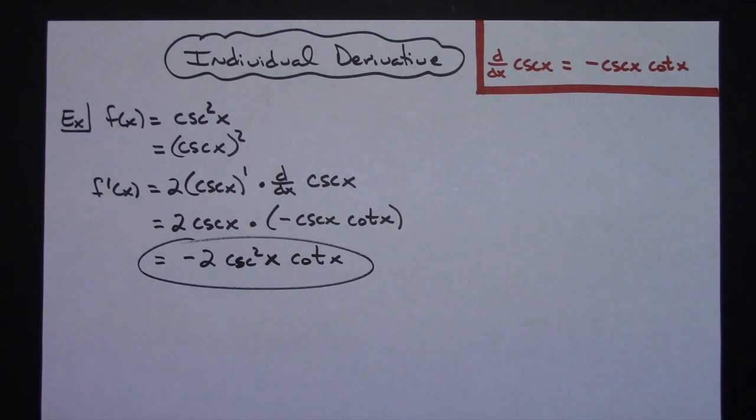So negative 2 cosecant squared x cotangent x.